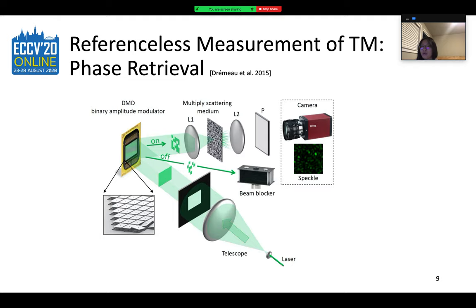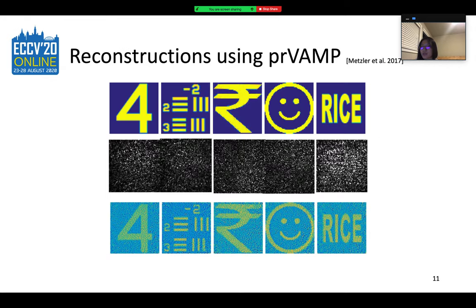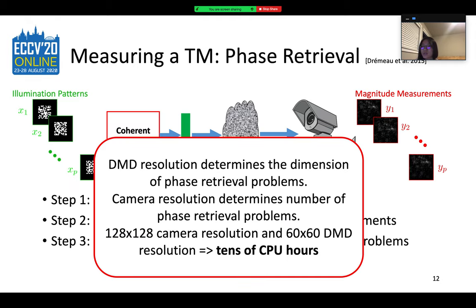In phase retrieval, the binary amplitude modulator or DMD is used to modulate the input field, and the modulated field is then passed through the medium. We first create a series of random illumination patterns and capture the corresponding calibration images through the scatterer. The magnitude images are then stacked together into a matrix, and we run phase retrieval algorithms on these intensity measurements to recover the complex TM row by row. Phase retrieval algorithms are more stable and can produce very accurate results, but they require much more computational power.